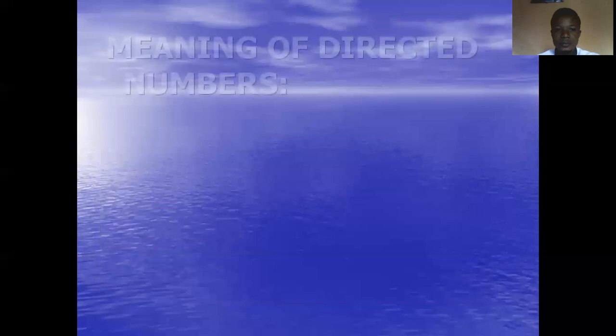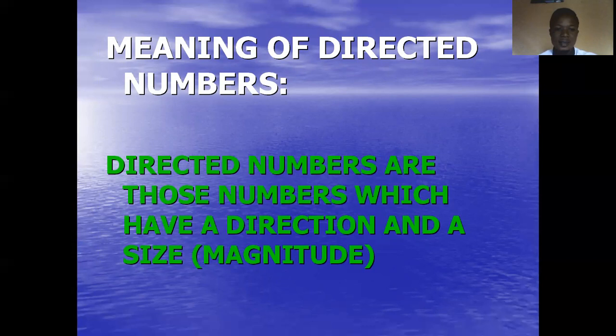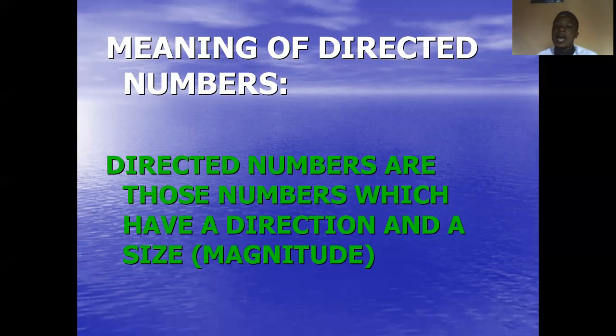Now let's see the meaning of directed numbers. Just like the slides I've shown earlier in this lesson, you see where the temperature of Iceland is too negative. Also, if you are sick, your temperature tends to have a very high positive value. So all these negatives and positives put together give us what we call directed numbers — those numbers which have a direction and a size. It can either go towards the negative direction or positive direction.